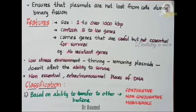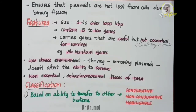Next are mobilizable plasmids. They are an intermediate class — they carry a subset of genes required for transfer. They parasitize another plasmid and transfer at high frequency in the presence of conjugated plasmids.